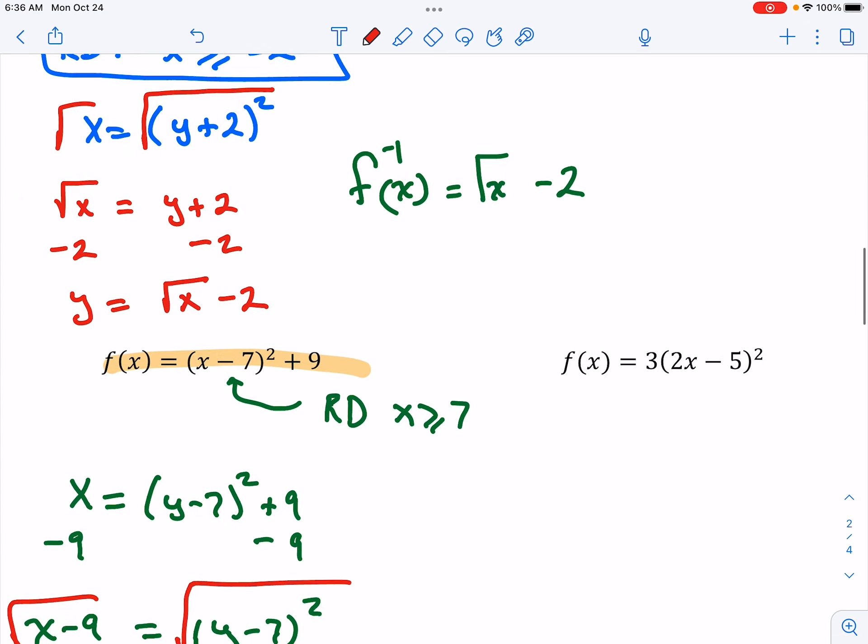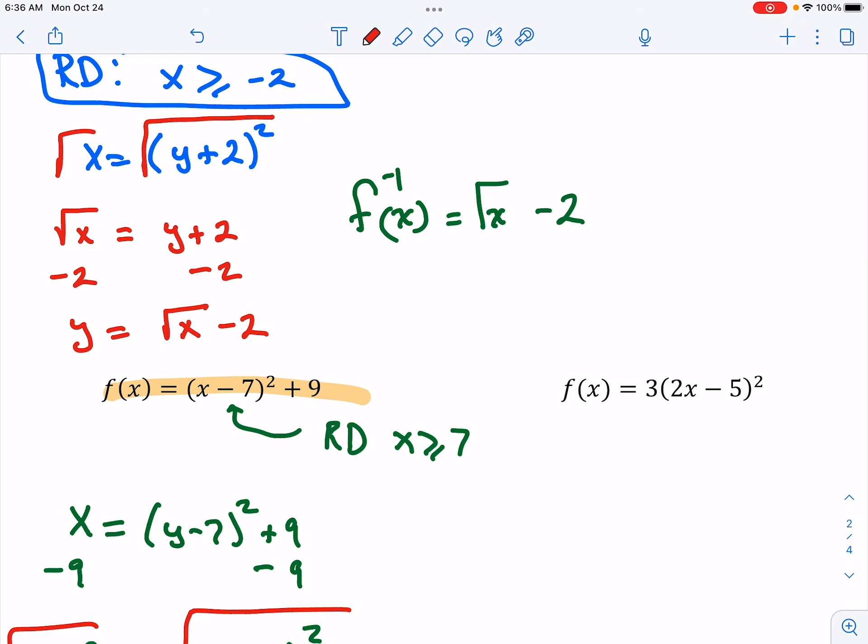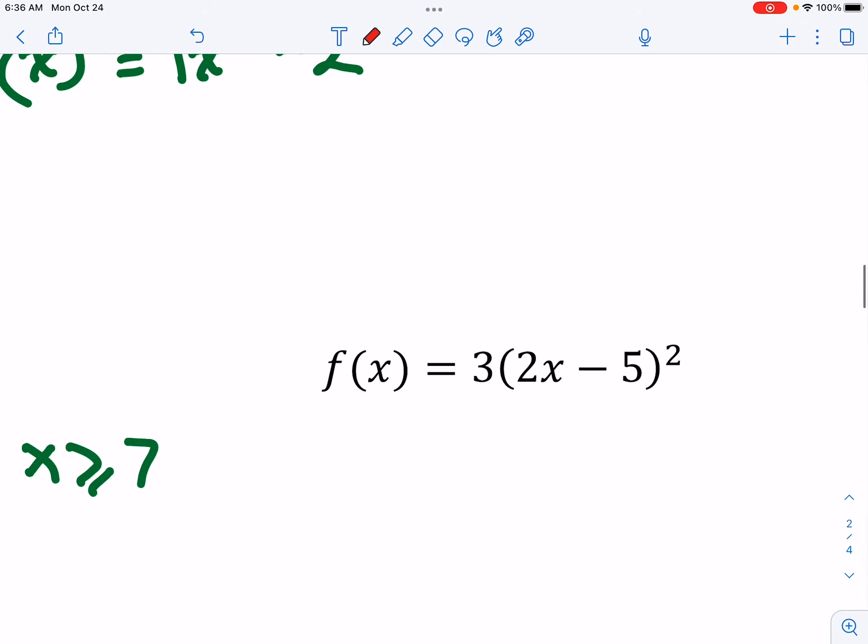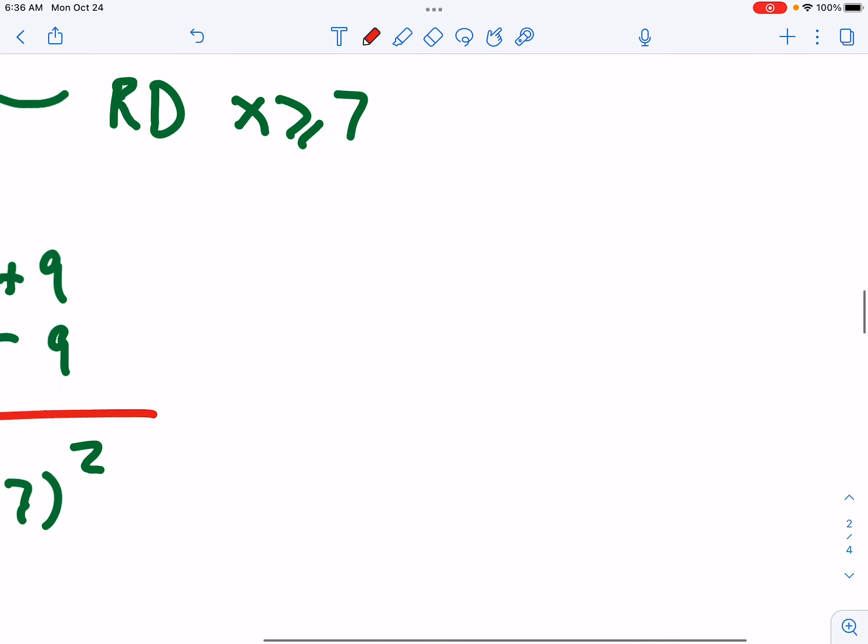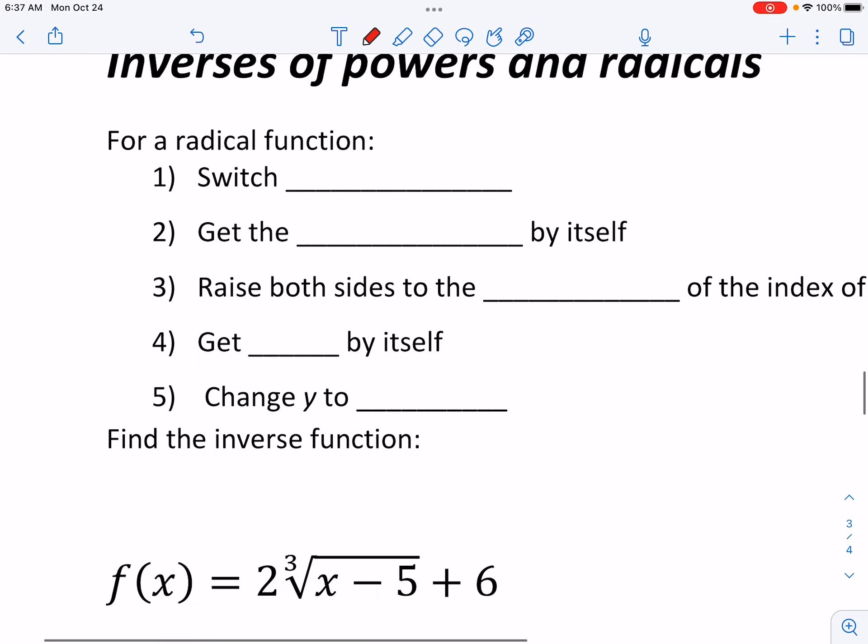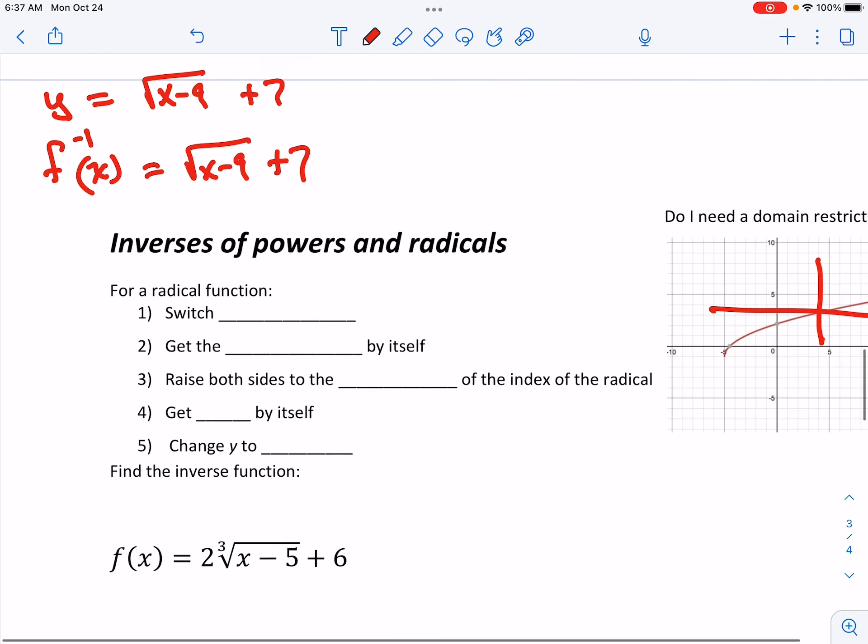In fact you only need restrictions when you do a power or the exponent is even. So if the exponent is an even number then we have restrictions. If it's an odd number or if it's a radical square root or cube root or fourth root we don't need restrictions.